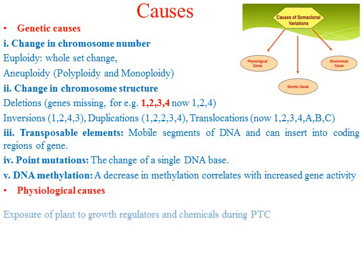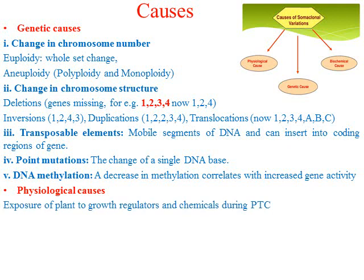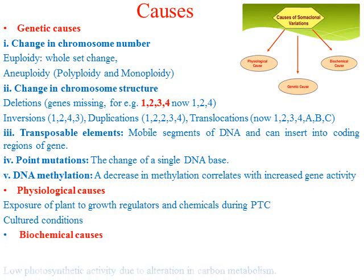Then we have physiological causes. When we expose a plant to growth regulators such as auxin, cytokinin, or other chemicals, it changes the physiology of the plant, and this leads to physiological variation. Also, in culture conditions, the temperature and atmospheric pressure are very different, which changes the plant physiology. The new plant will be different from the mother plant, and this is one of the causes of somaclonal variation.